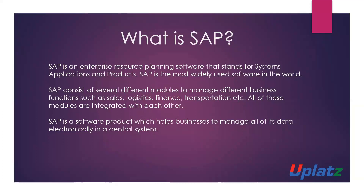SAP is an enterprise resource planning software that stands for Systems, Applications, and Products. It is the most widely used software in the world. It consists of different modules to manage different functions within the business such as sales, logistics, finance, transport, and so on. All of these modules are finally integrated with each other through a centralized system.